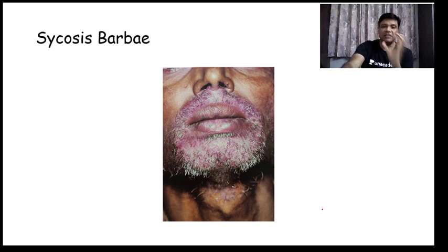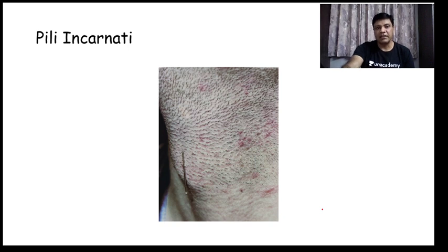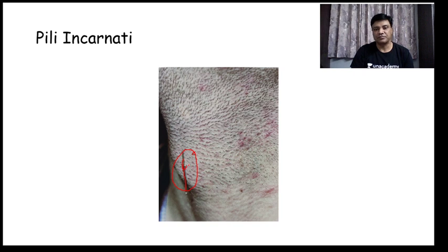Sycosis barbae involves the full depth of the hair follicle, in comparison to folliculitis barbae which is a superficial infection. Pili incarnati or pili recurvati: the hair comes out of the follicular ostium and enters back into the same ostium — you can see here a pin can go inside that loop of hair. So folliculitis in the beard area can be sycosis barbae, folliculitis barbae, or pseudofolliculitis barbae.